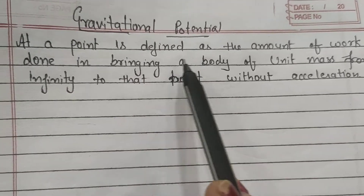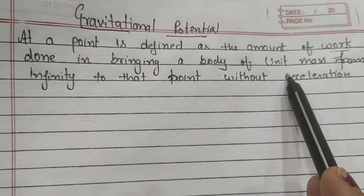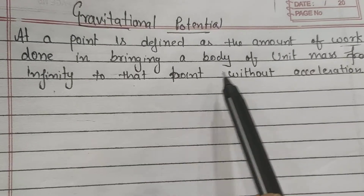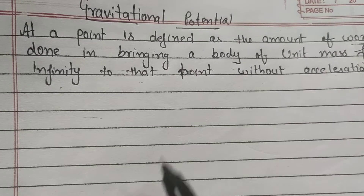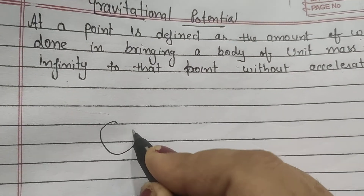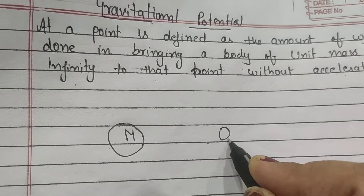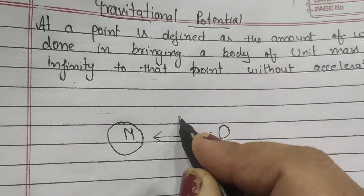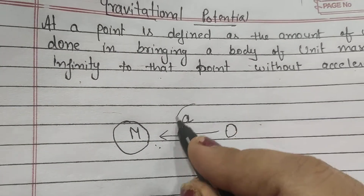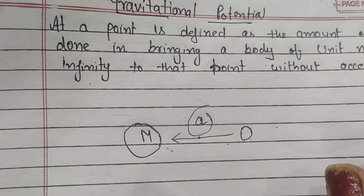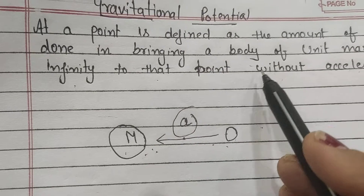Gravitational potential at a point is defined as the amount of work done in bringing a body of unit mass from infinity to that point without acceleration. Now, suppose this is a body of mass m, and when we bring another body in its vicinity which is free to move, it will get accelerated toward it. If this body is to be brought from infinity to any point without acceleration, we have to make the net force zero by applying a force equal and opposite to the gravitational force.